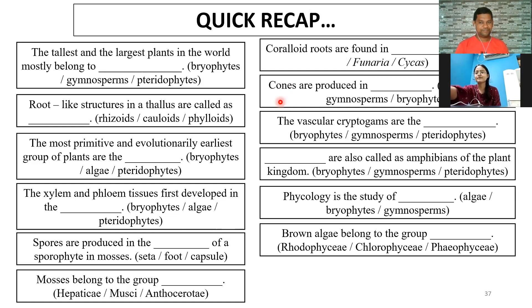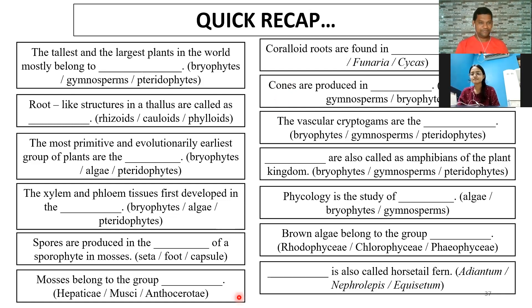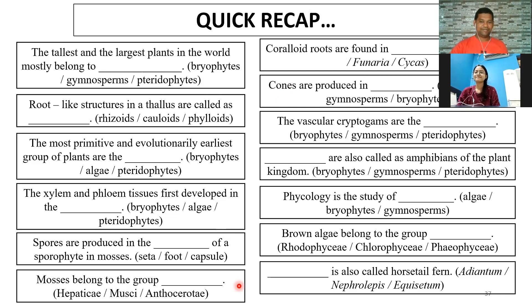Spores are produced in gymnosperms — Musci. And lastly, Equisetum is also called as horsetail fern. Very good. Yes, the word Equisetum means horse.